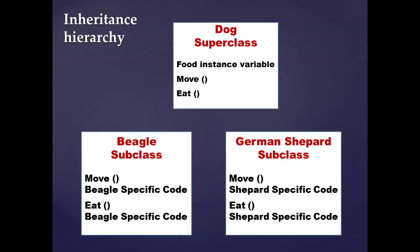That's why we have to have code that is specific to their own move method within the subclass, and that's what we mean when we extend the behavior of a method. It makes sense because a German shepherd will move and eat a little bit differently than a beagle, so we need some specific code in those subclass methods to address that.